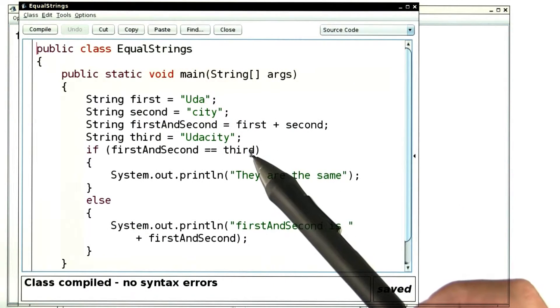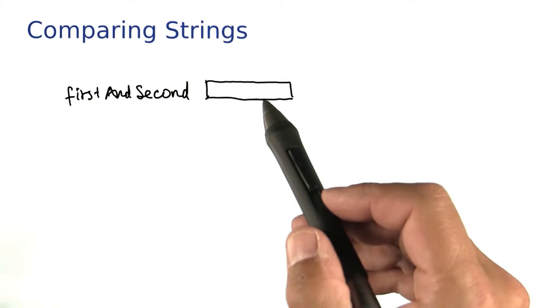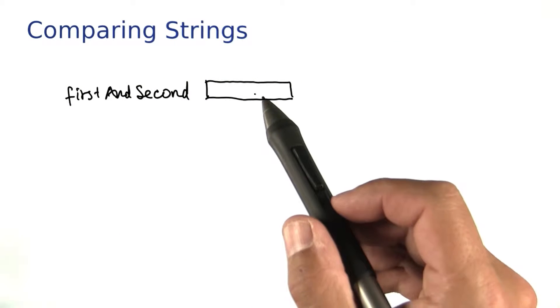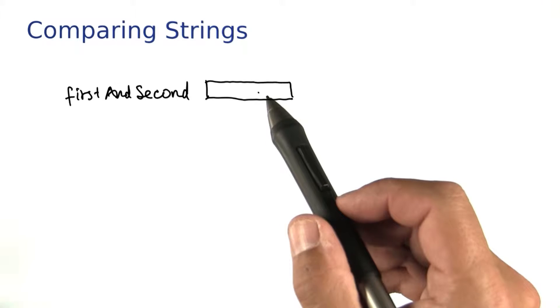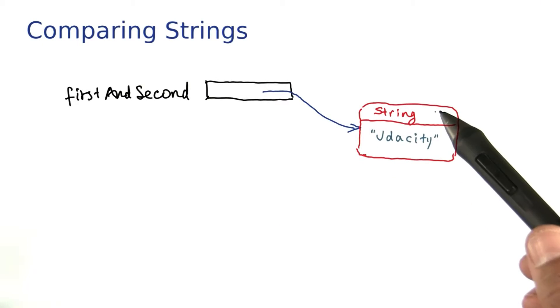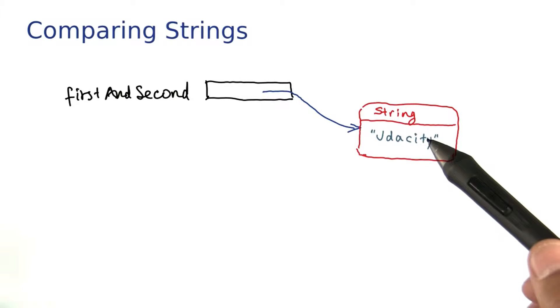So why isn't it the same as third, which is also Udacity? Let me explain. First and second is a variable. Any object variable contains a reference to the object, like this. The string object contains the letters Udacity.